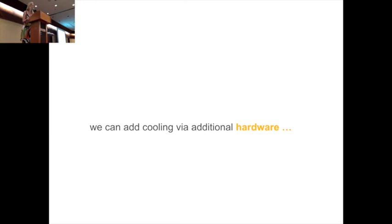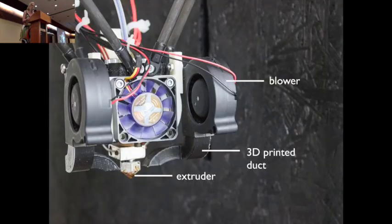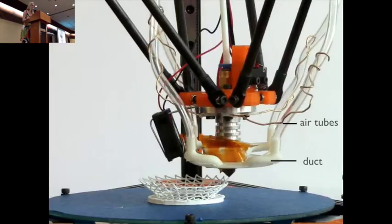Of course we can always add additional cooling by adding hardware. Let me show you two additional cooling systems we built. This one here uses two blowers on the side and cools the print via a duct. And then if you want to have even stronger cooling for even faster printing, you can also use a compressor which is then connected via air tubes here.